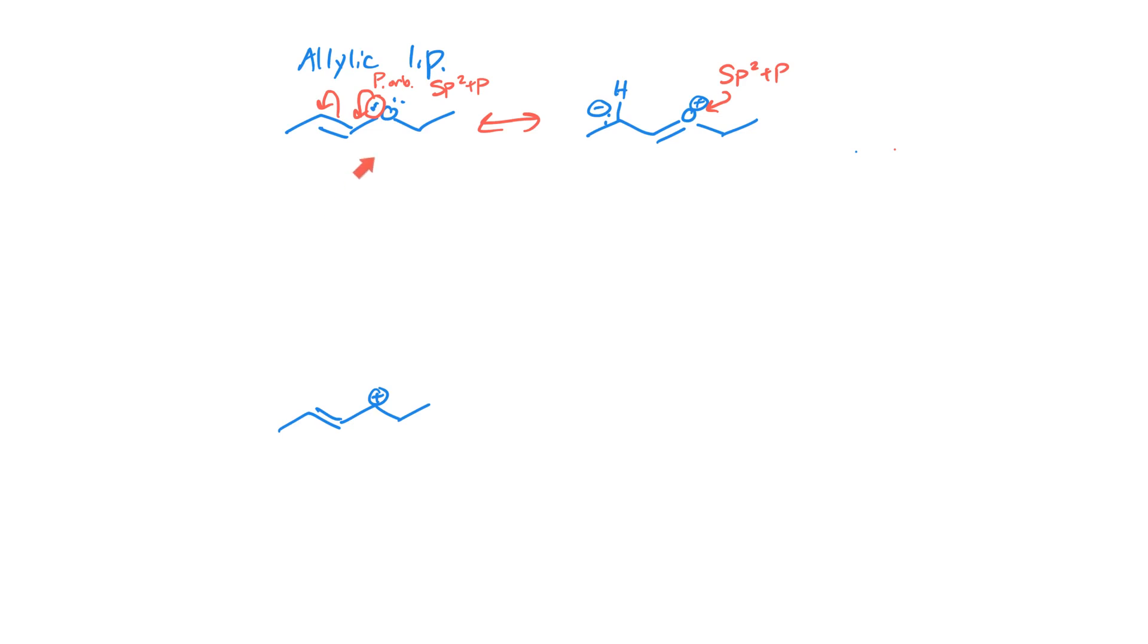So this oxygen, by virtue of it being part of a resonance pattern, is already sp2 hybridized. It can undergo resonance, this lone pair can create a pi bond right here. Same thing with this carbon right there. So all three of the atoms, and let me highlight the three atoms in this resonance, or in this allylic system that we are discussing. All three of those are sp2 plus p, and you're going to recognize that more and more as we get more familiar with resonance.